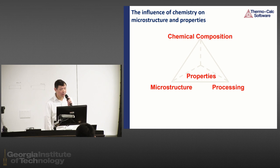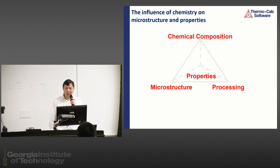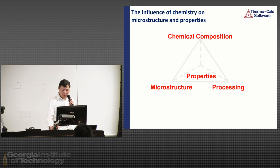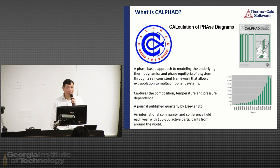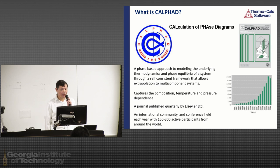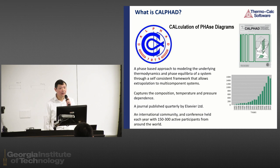Many people are familiar with the microstructure-property-processing triangle. We want to add another corner to make it a prism — the chemical composition corner. That's really what CALPHAD is working on. We try to understand how thermochemistry can affect microstructure, properties, and processing conditions. CALPHAD originates from the acronym 'CALculation of PHAse Diagrams.' It's a society that started in the 1970s, developed by Larry Kaufman from MIT, and gradually grew to generate phase equilibrium and phase diagram data for industrial use.